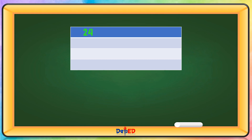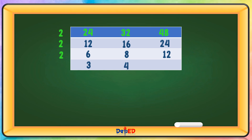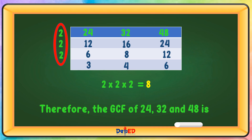We have 24, 32, and 48. Using prime number 2: 24 divided by 2 equals 12, 32 divided by 2 equals 16, 48 divided by 2 equals 24. Again by 2: 12 divided by 2 equals 6, 16 divided by 2 equals 8, 24 divided by 2 equals 12. Again by 2: 6 divided by 2 equals 3, 8 divided by 2 equals 4, 12 divided by 2 equals 6. Multiply: 2 times 2 times 2 equals 8. Therefore, the GCF of 24, 32, and 48 is 8.